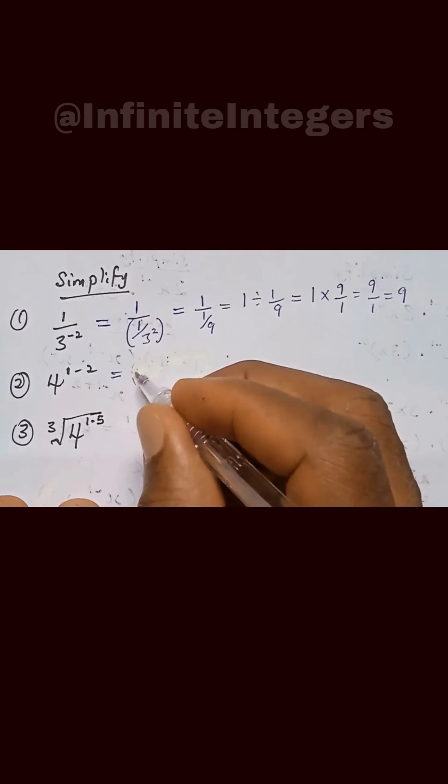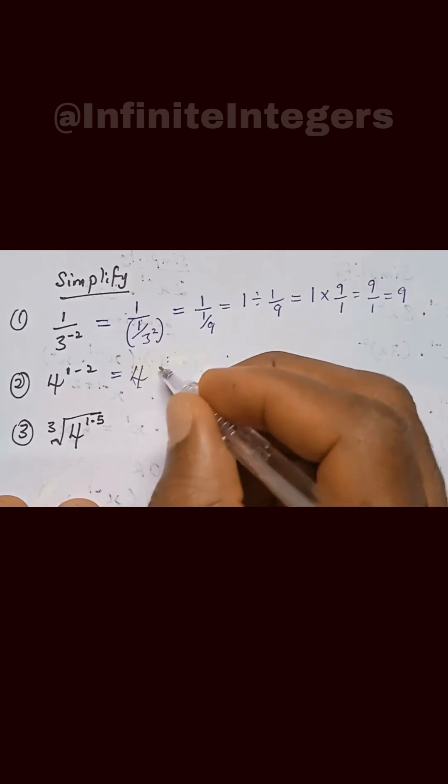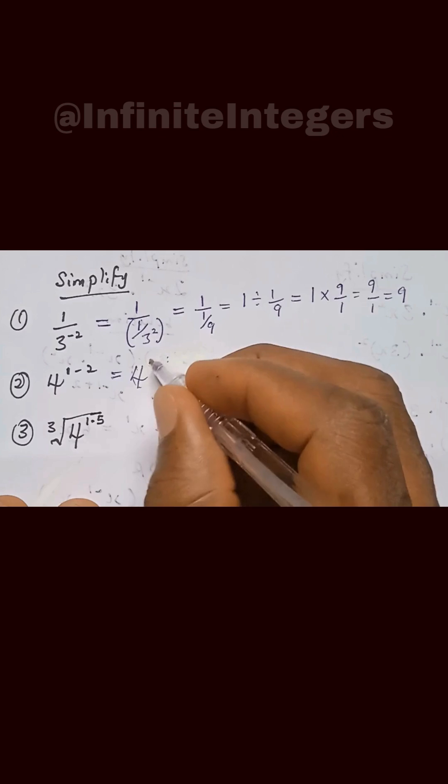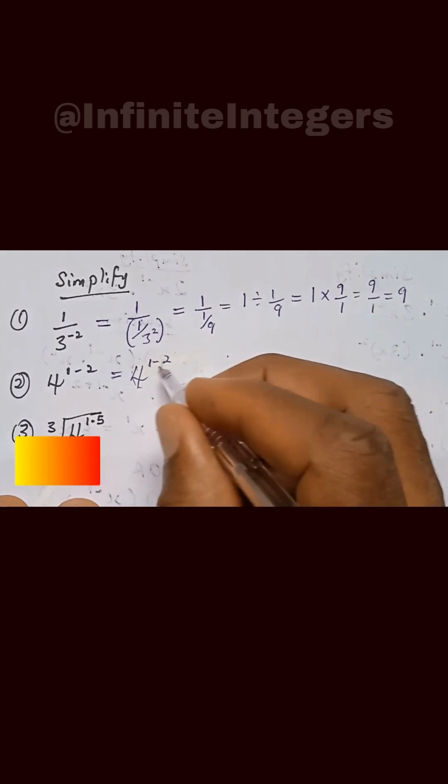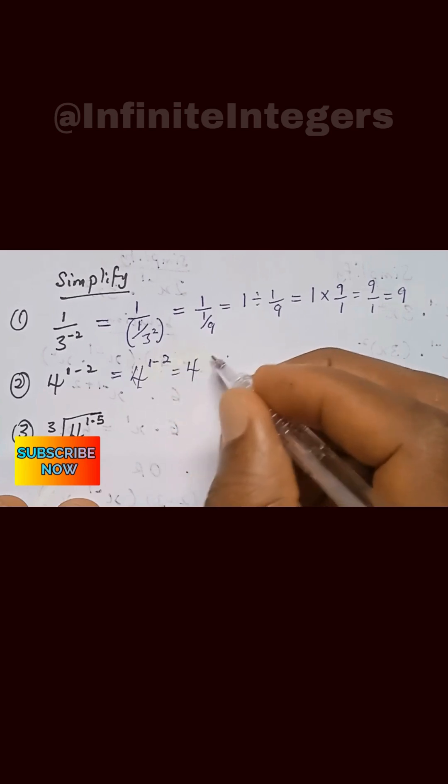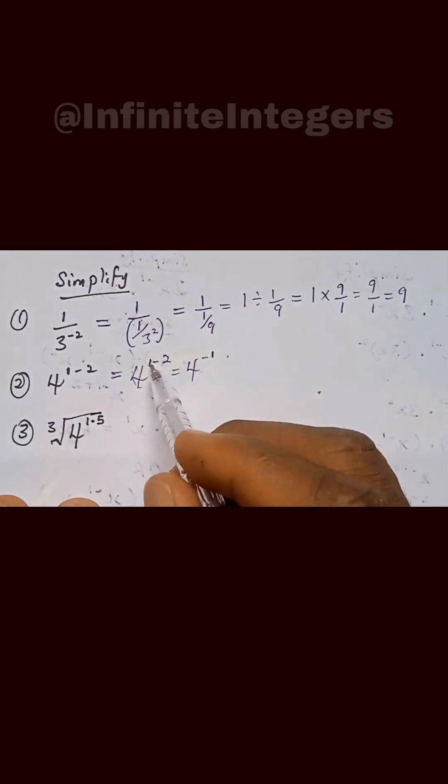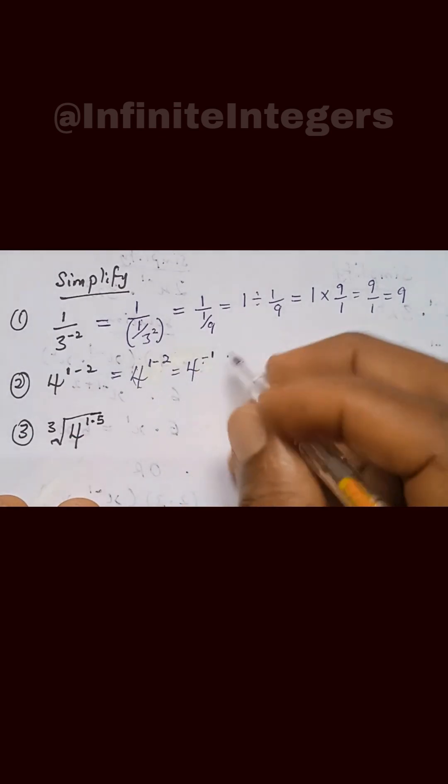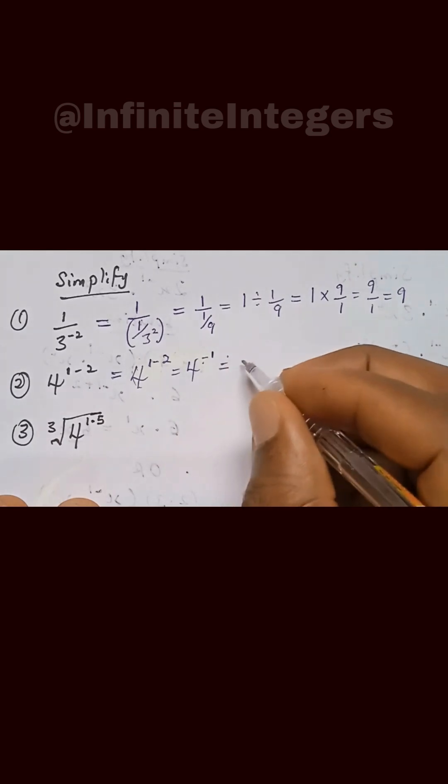For the second expression, we have 4 power 1 minus 2. Let's simplify the power and that gives us 4 power minus 1. 1 minus 2 gives us minus 1, and we can then reduce the base.